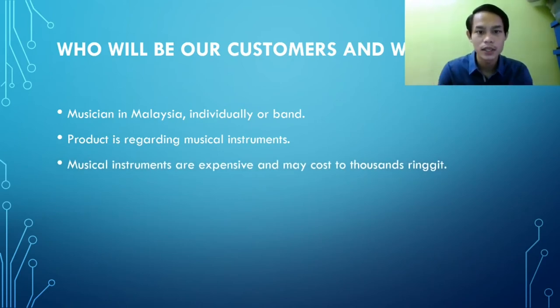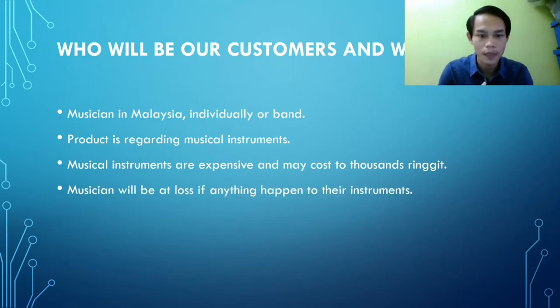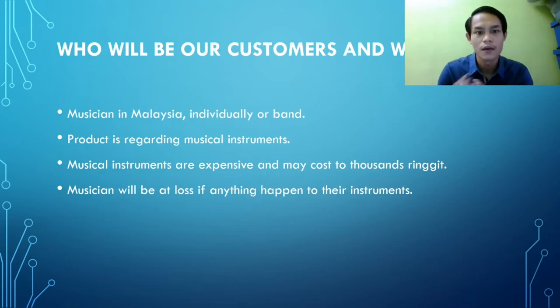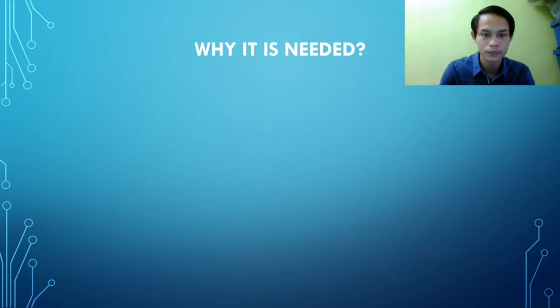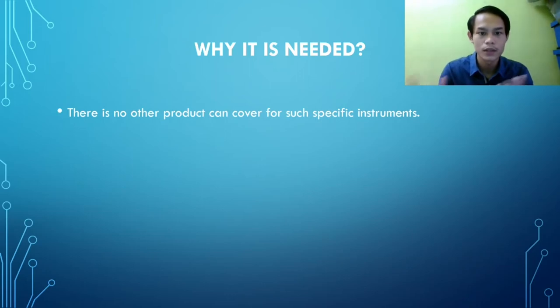Many musicians in Malaysia are collecting rare and limited musical instruments that are very expensive and may cost two thousand ringgit. If anything unexpected happens to the instrument and causes the musician to be in a loss, they can claim insurance to cover their losses — for example, if the instrument is caught in fire or lost because of theft. This product is significant because in Malaysia there is no other insurance product that covers such specific instruments.